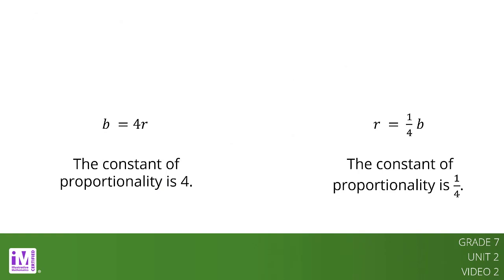In general, whenever there is a proportional relationship, we can write an equation of the form Y equals KX. X and Y represent the quantities in the situation, whatever they are. The equation tells us that Y is proportional to X. We can always multiply X by the same number, K, to get Y. The constant of proportionality is K.